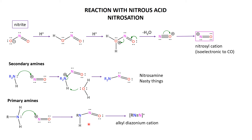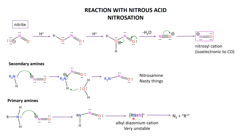It protonates, deprotonates, loses water, and so on through the mechanism, and you get the so-called alkyl diazonium cation — where the alkyl R group is bonded to the N₂ unit — and of course it's a cation. An alkyl diazonium cation is extremely unstable. You don't isolate any of these. When you take a primary amine and react it with nitrite and HCl to generate the nitrosyl cation, you get the alkyl diazonium cation, which immediately loses N₂ and leaves behind a carbocation R⁺.